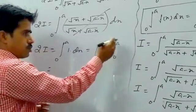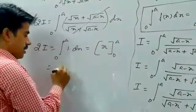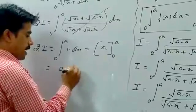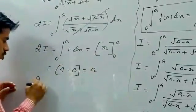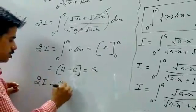First of all, we put values: A minus 0. It is equal to A. So 2I is equal to A. We get I equal to A by 2.